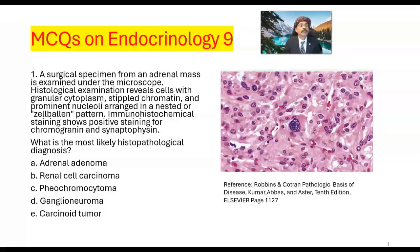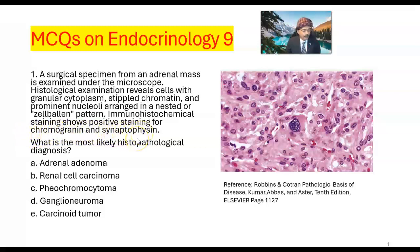Synaptophysin, granular cytoplasm, cells with granular cytoplasm, stippled chromatin, and prominent nucleoli arranged in a nested or zellballen pattern. Immunohistochemical staining shows positive staining for chromogranin and synaptophysin. The diagnosis options are: adrenal adenoma, adrenocortical carcinoma, pheochromocytoma, ganglioneuroma, or carcinoid tumor.